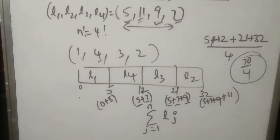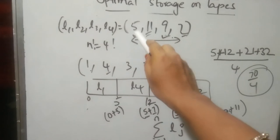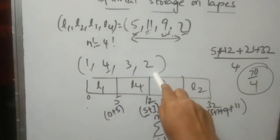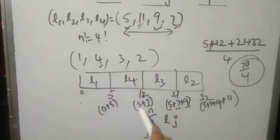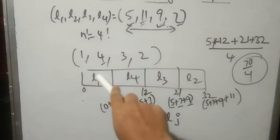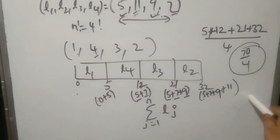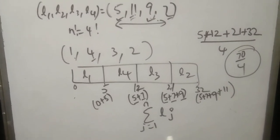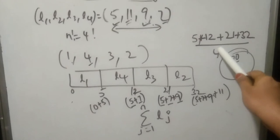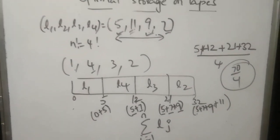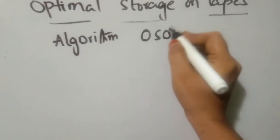So what we simply need to do is arrange the lengths in sequential sorted ascending order. For lengths 5, 7, 9, 11 — first add 0 plus 5, then first plus fourth job length, then first plus fourth plus third job length, then add the second. Sum all those retrieval times and divide by the number of programs to get the mean retrieval time. Let's now write the algorithm for optimal storage on tapes.